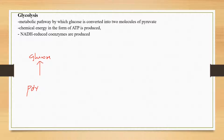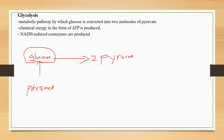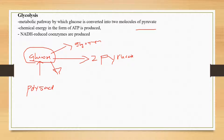We will see what happens to glucose. Remember that glucose comes from the degradation of starch, which is a polysaccharide. Once inside the cell, the glucose will undergo a transformation by which it can be converted into two molecules of pyruvate. Glycolysis is a metabolic pathway by which glucose is converted into two molecules of pyruvate. Glucose can also be converted into glycogen or into ribose.